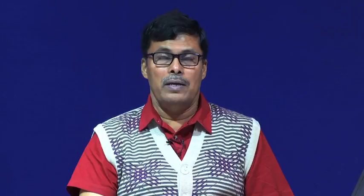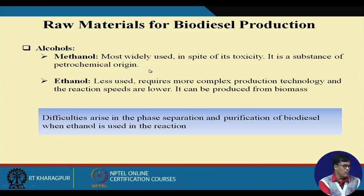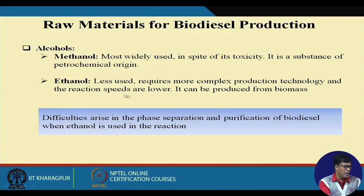The raw materials for biodiesel include rapeseed, palm, and sunflower. The alcohol raw material used is methanol, which is the most widely used despite its toxicity, and is a substance of petrochemical origin. Ethanol is used in very small amounts because it requires more complex production technology, reaction speeds are low, and difficulties arise in the phase separation and purification of biodiesel where ethanol is used. That is why methanol is mostly used for biodiesel production.